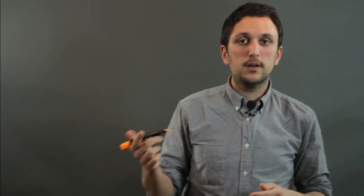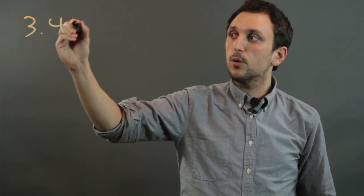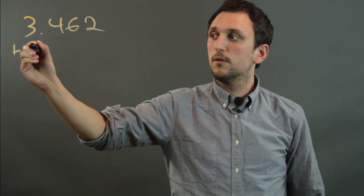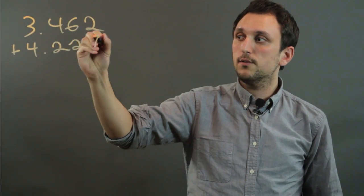So when you do partial sums with decimals, you're basically breaking the number up into the individual places. For example, if we have the number 3.462 plus 4.227,